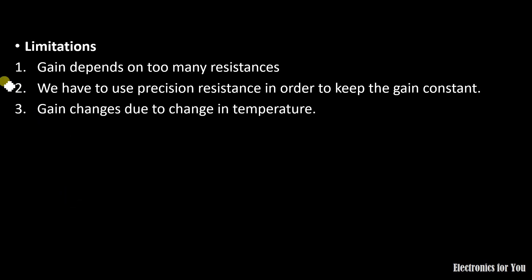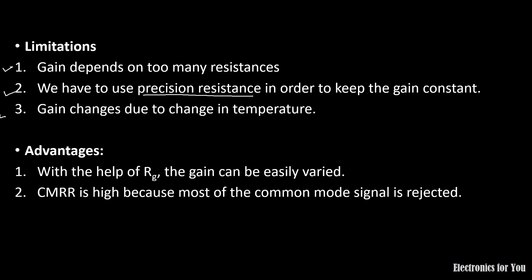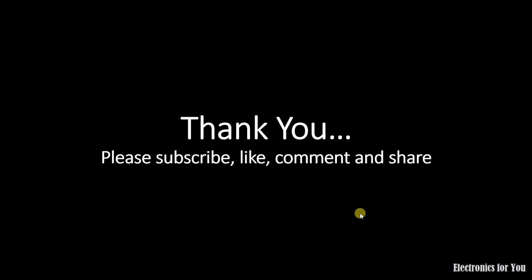Some limitations are: the gain depends on too many resistances, so we need precision resistors with accurate fixed values. Also, the gain changes due to change in temperature. The advantages are: by varying RG we can vary the gain, and the CMRR is high because most of the common mode signal is rejected. Thank you.